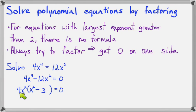Inside the parentheses, we'll get x squared minus 3. Now, if this times this is 0, one of my factors must be 0. If 4x squared is 0, then x squared is 0, meaning x itself would have to be 0.